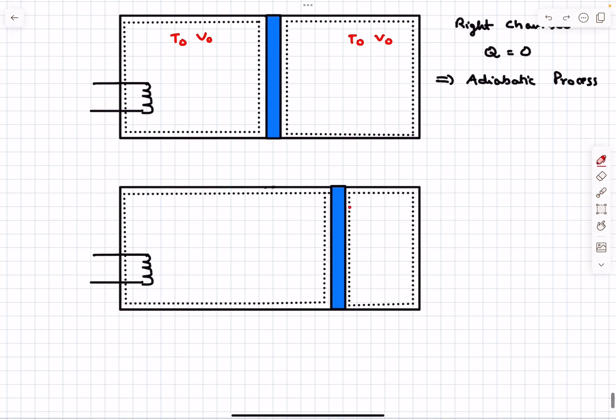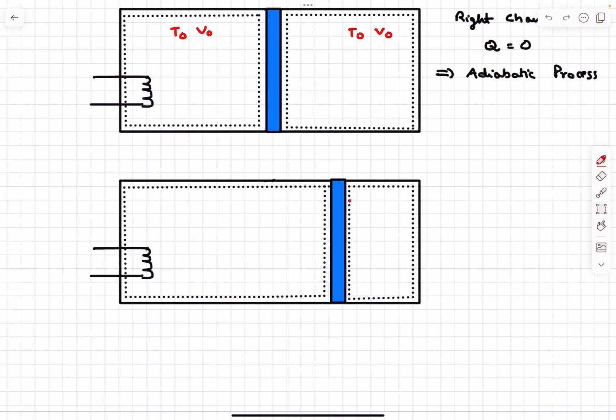Finally it's given that the volume of the right chamber becomes V0/2, so obviously the volume of the left chamber becomes 3V0/2. Let's call the temperature on the right chamber TR and the temperature on the left chamber TL.